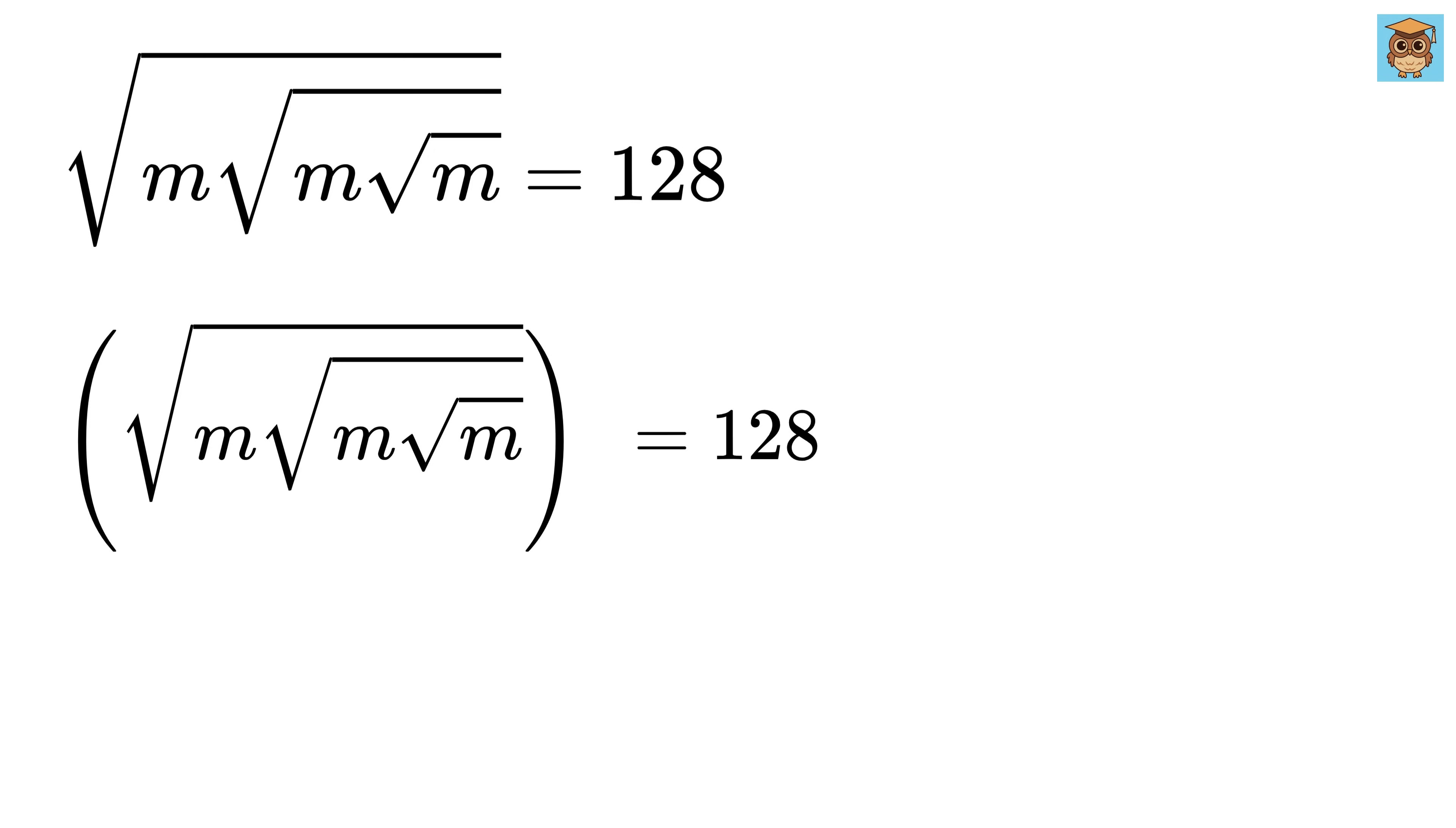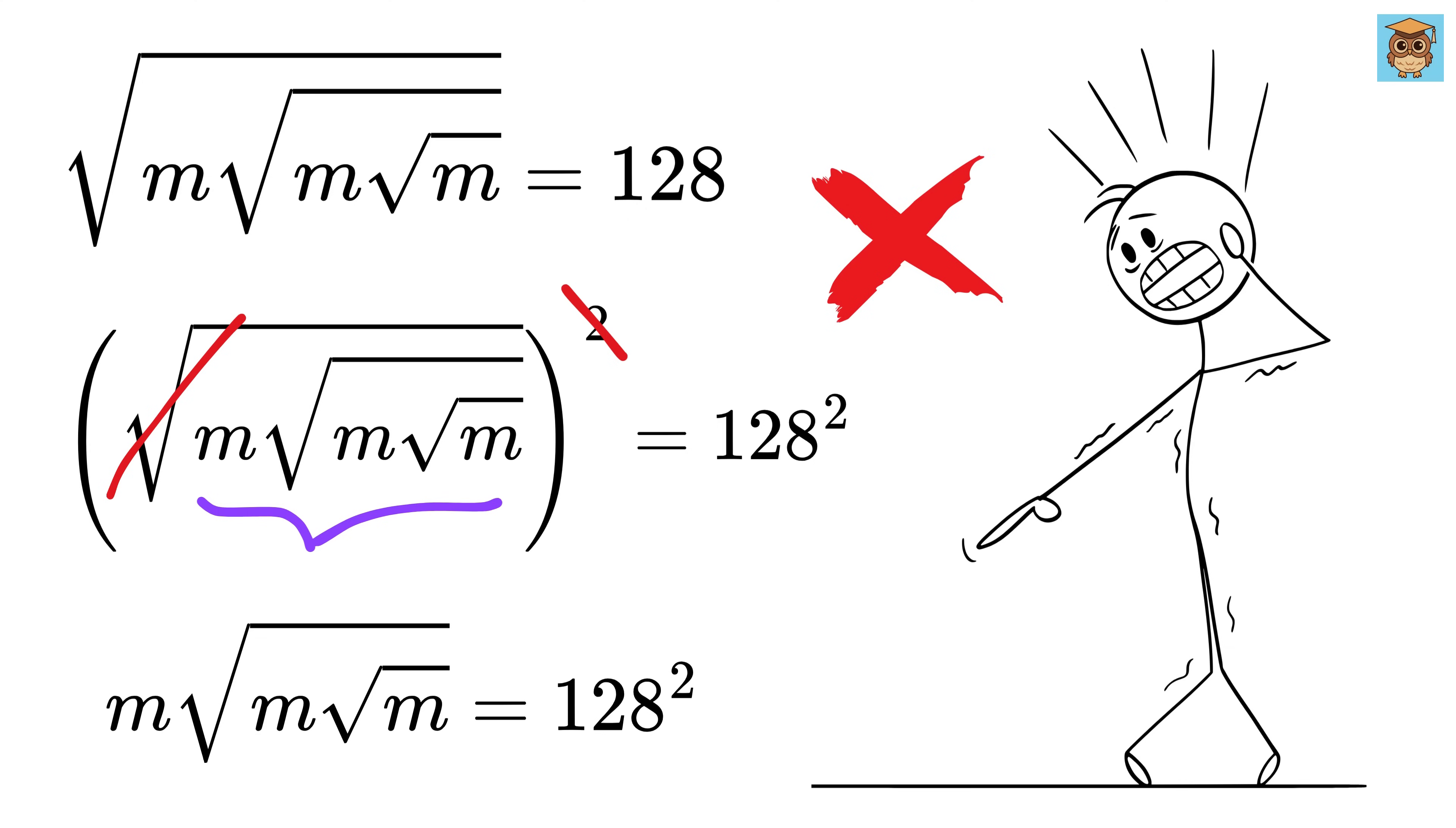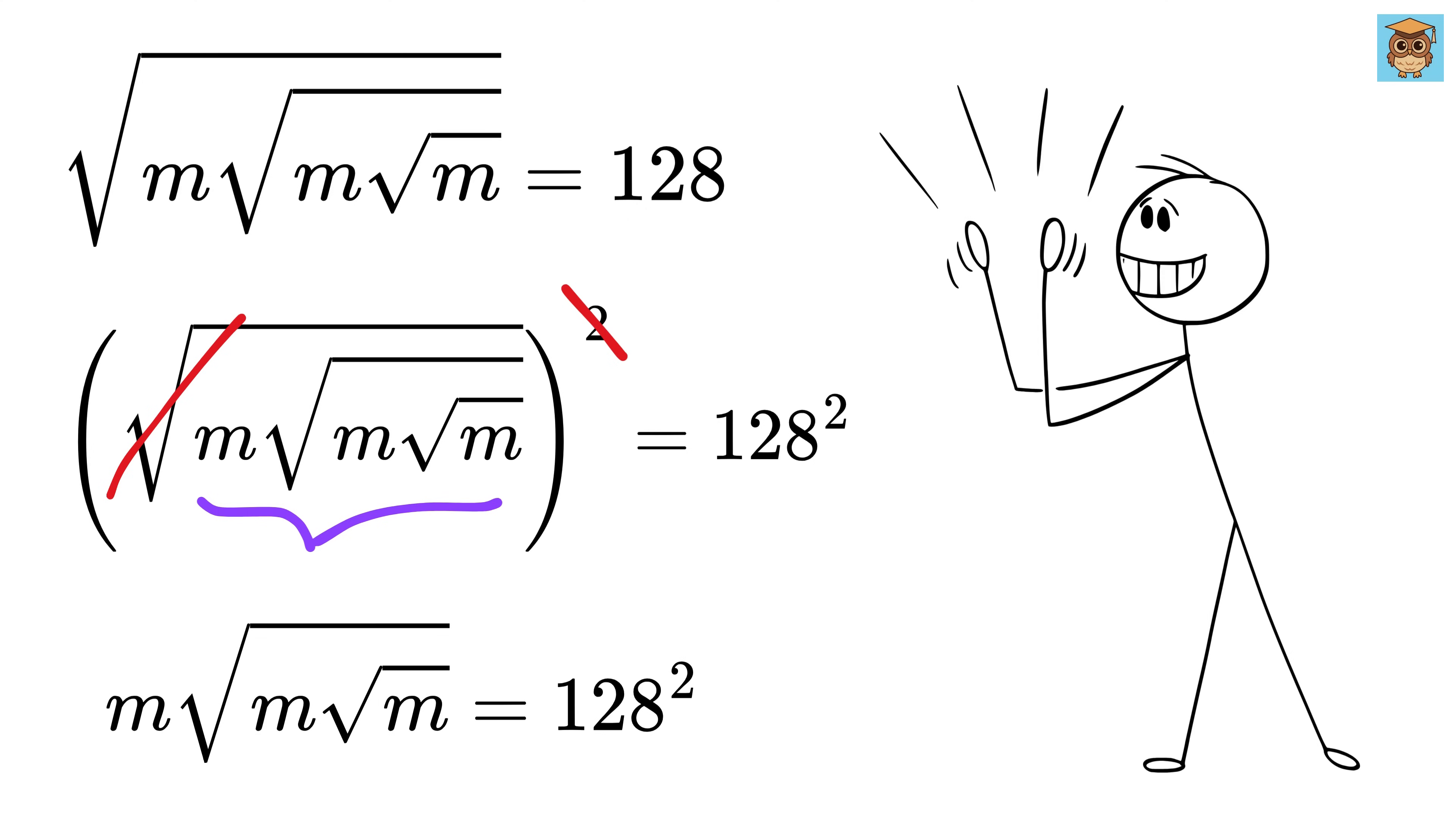If we square both sides of this equation, then this square root will get cancelled with this power 2, and we get m under root m under root m will be equal to 128 square. Don't get scared with this big value, because later you will be blown away when you see how beautifully it will turn into a smaller number.